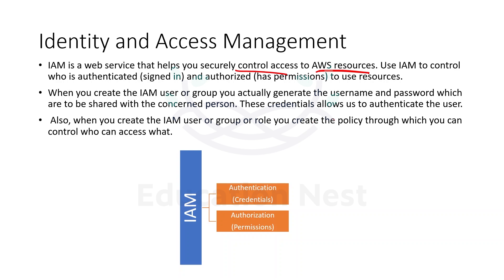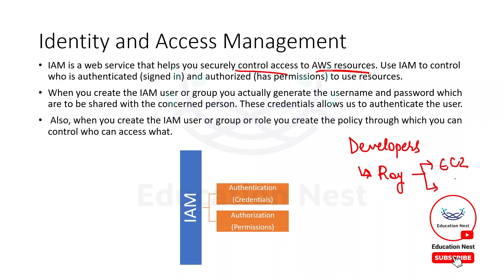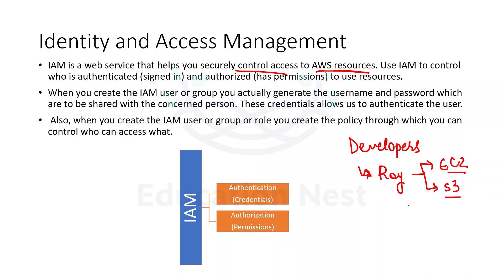For example, if I have a developer in my team — let's say the name of that developer is Roy. I want Roy to only access EC2 instances and S3, that is the storage bucket. I just want only these two services to be accessed by Roy. So I have to create one IAM user for Roy.